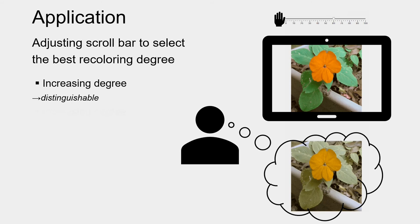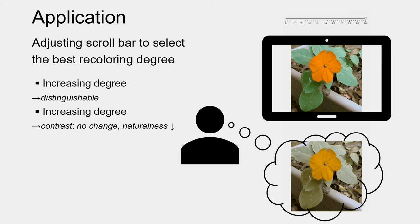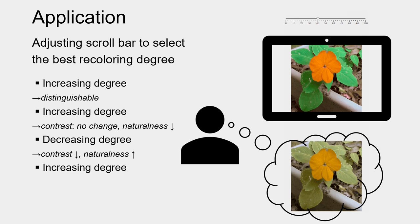Continuing to move the bar, the user may find naturalness is decreased while contrast is almost unchanged. So the user moves the bar back. The user may find naturalness is increased while contrast is decreased. Continuing to adjust the bar, the user finally selects the recolored image which provides sufficient contrast and adaptable naturalness. Please refer to the manuscript for detail.